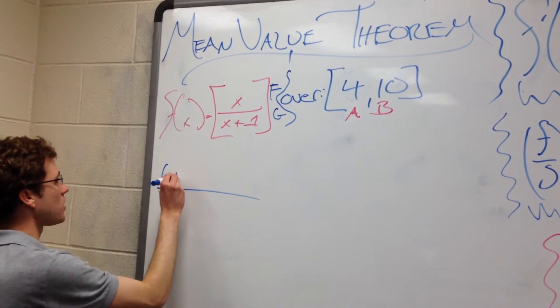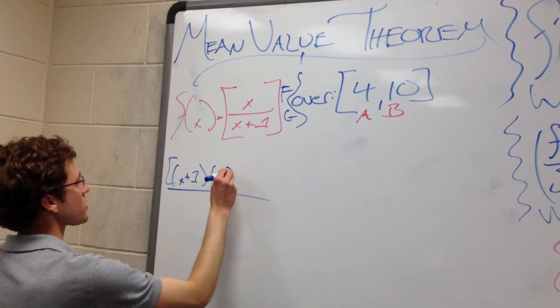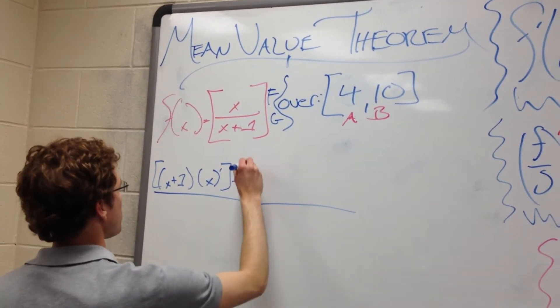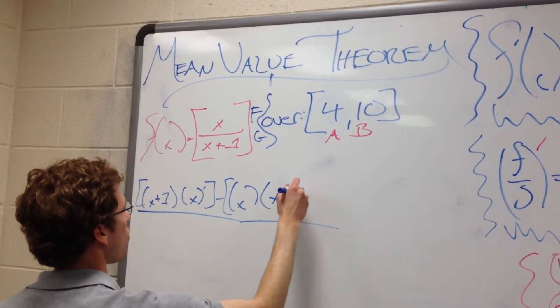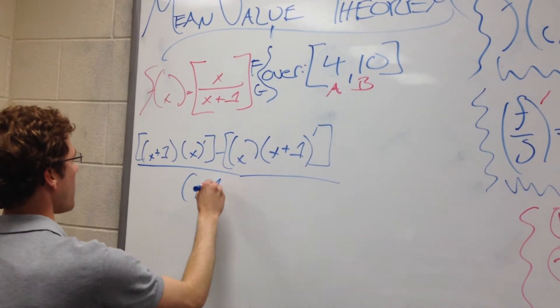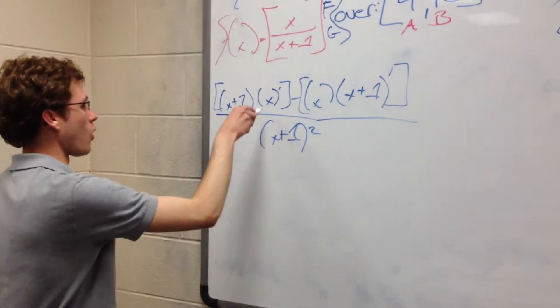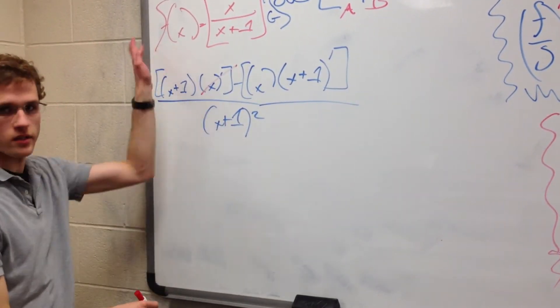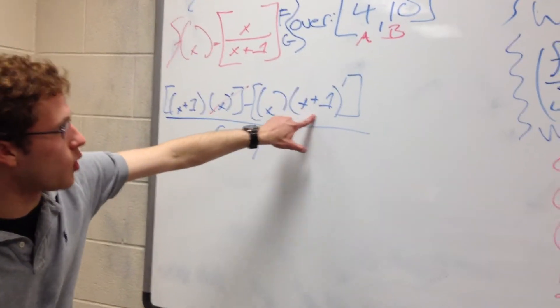And let's go ahead and put it into the formula. So, g x plus 1 times f prime, so x prime, minus f, which is just x, times g prime, which is x plus 1 prime. All right, all over g squared, x plus 1 squared. All right, so let's save ourselves some legwork. What is x prime? x prime is just 1, so this is going to be this function times 1. We can forget about the x prime. x times x plus 1 prime.